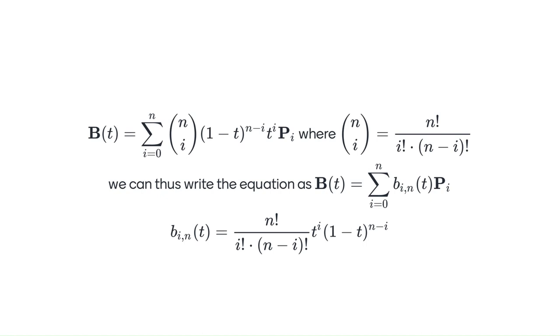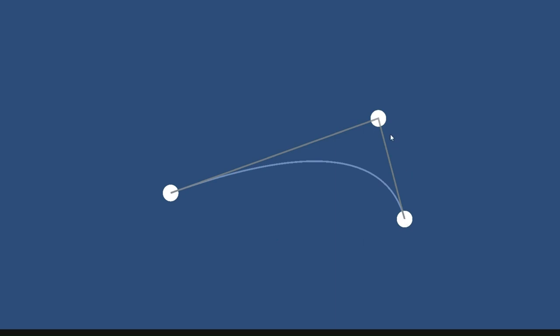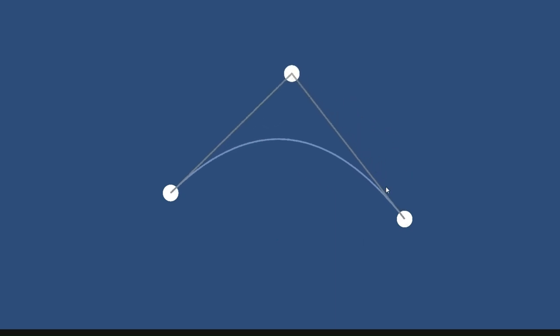In plain English, this equation defines a basis function used in spline interpolation, where t is a parameter ranging from zero to one, i represents the index of the basis function, and n represents the degree of the B-spline curve. The equation calculates the contribution of each control point to the final curve position at parameter t. For an n-degree curve, there will be n plus one control points. When the number of control points is two, or a degree of one, a Bezier curve becomes a straight line equivalent to linear interpolation. When the number of control points is three, or a degree of two, a Bezier curve becomes a parabola.